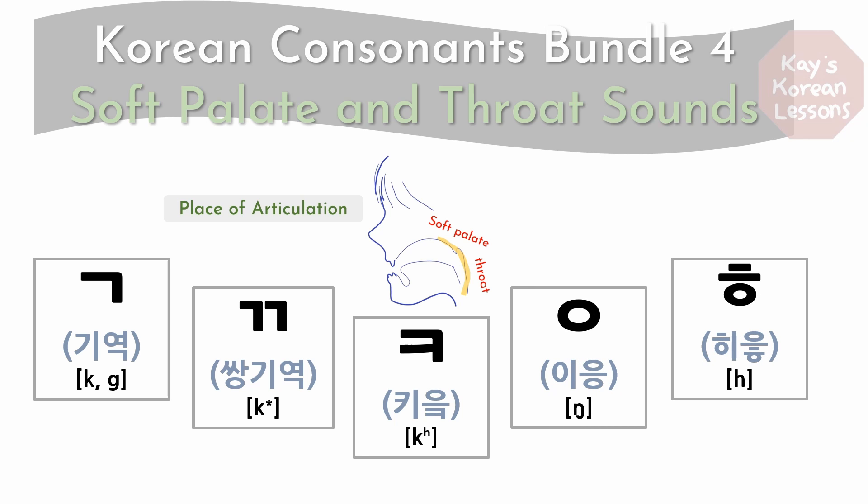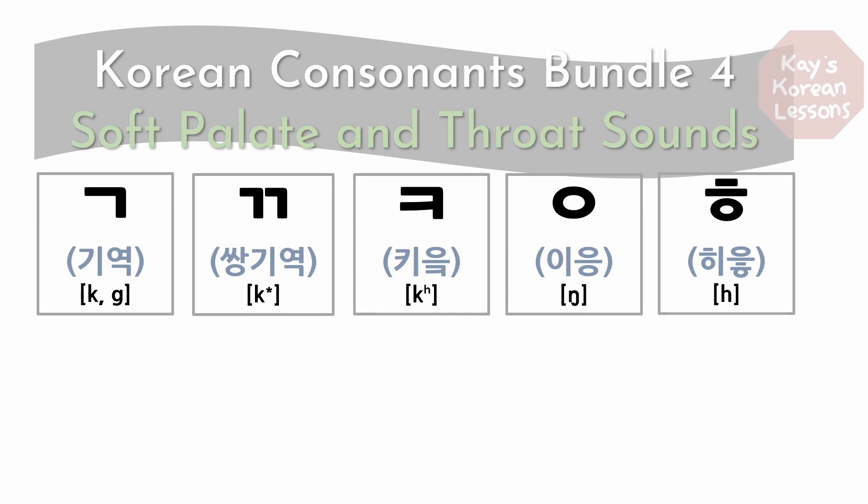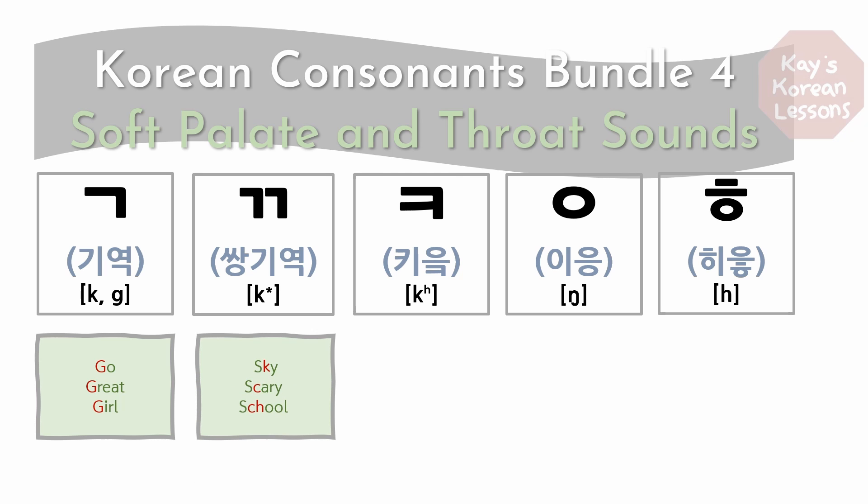Alright, let's start. ㄱ has an in-between sound of English G and K sound. When we say 고, great, girl, you hear this ㄱ sound. 쌍ㄱ sound you can hear from sky, scary, and school.